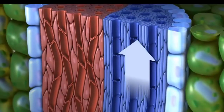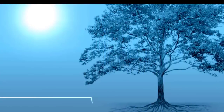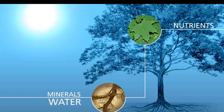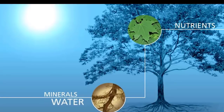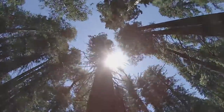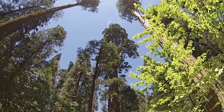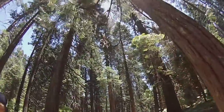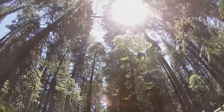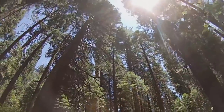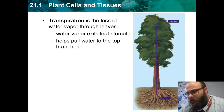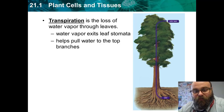We have cohesion and adhesion inside the xylem, and water is also evaporating off leaves, pulling water up through the stem and roots. Combining adhesion and cohesion gives you capillary action, and adding transpiration on top of that allows plants to grow quite large compared to most animals — all without any moving parts. Transpiration is the loss of water vapor through leaves, and that water vapor is lost through a part of the leaf called the stomata.